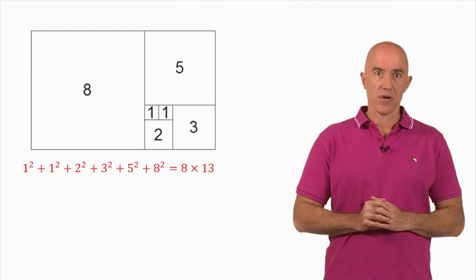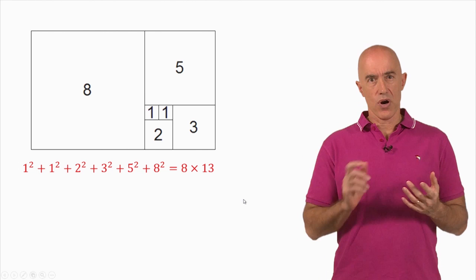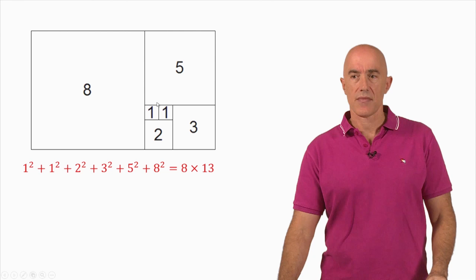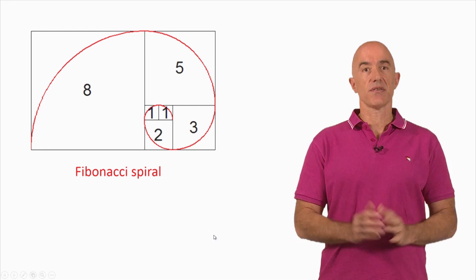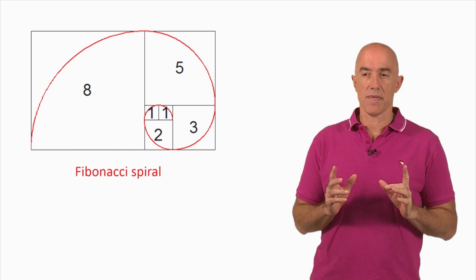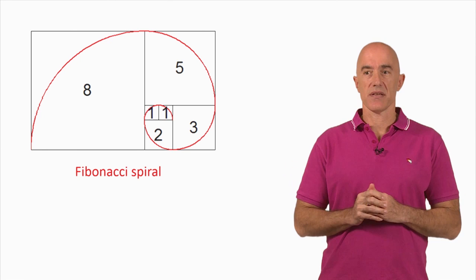We can now draw the spiral. The easiest way is to draw quarter arcs of circles connecting the two opposite sides inside each of these squares. And here it is — this is called the Fibonacci spiral. I think it's a rather pretty spiral as spirals go.